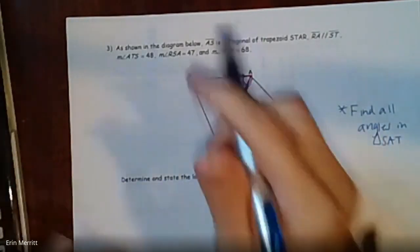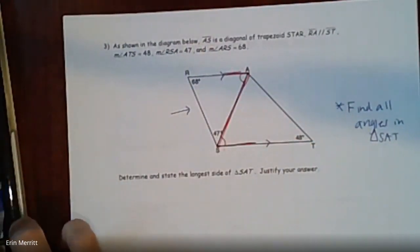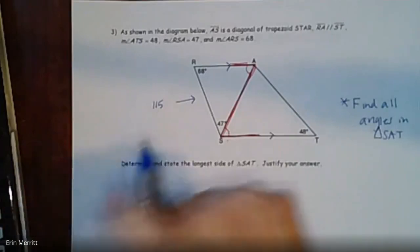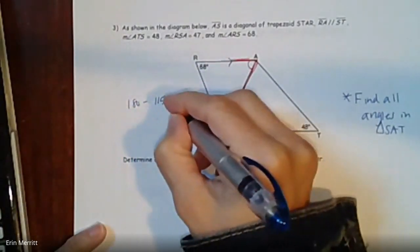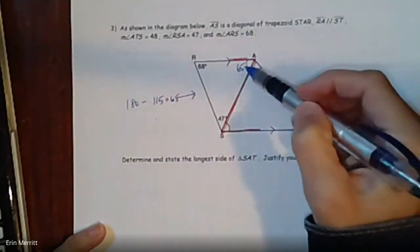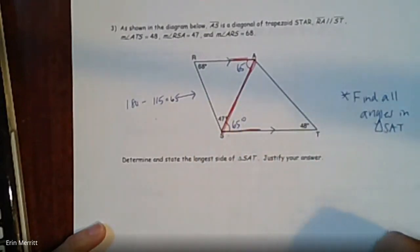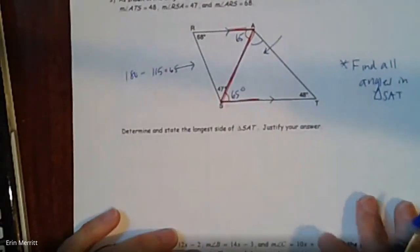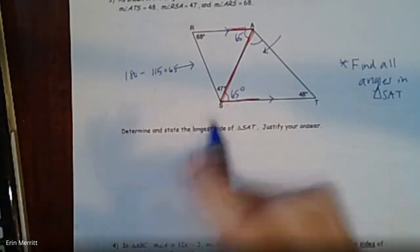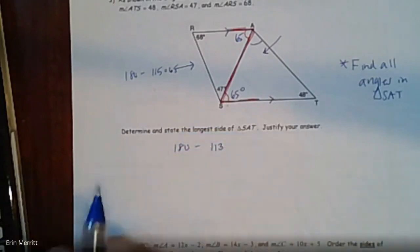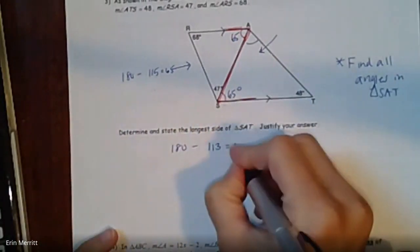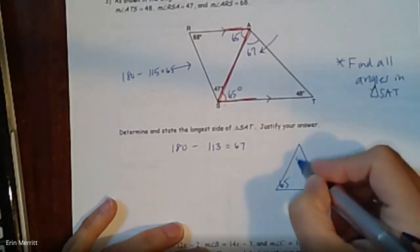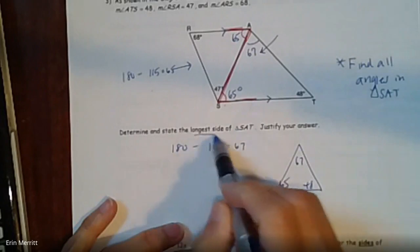In the upper triangle, we have angles 68 and 47. Adding those gives 115, and subtracting from 180 leaves 65 degrees. Because of alternate interior angles, the corresponding angle in triangle SAT is also 65 degrees. Now with 48 and 65 in triangle SAT, add them to get 113, then subtract from 180 to get 67 degrees for the top angle.